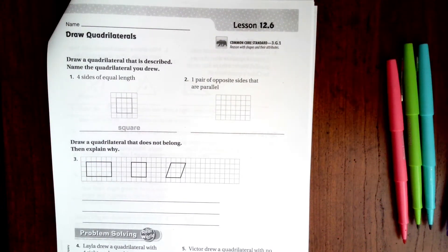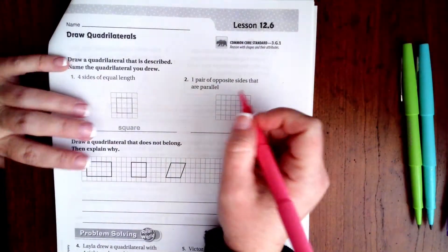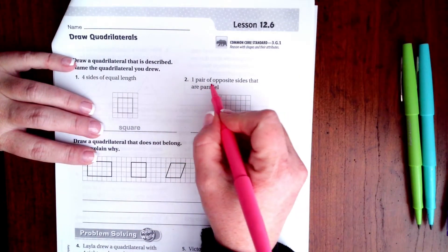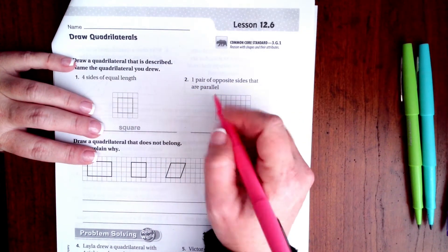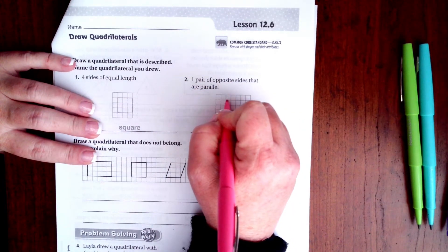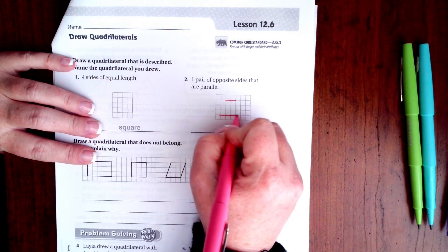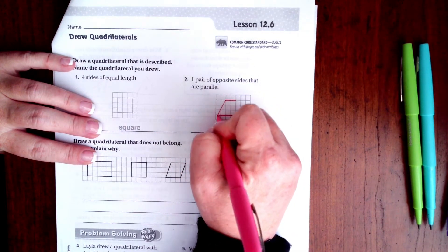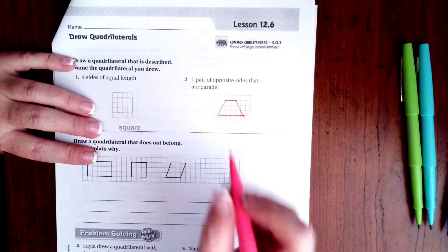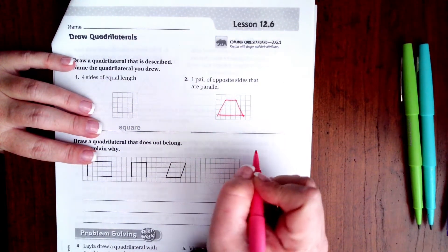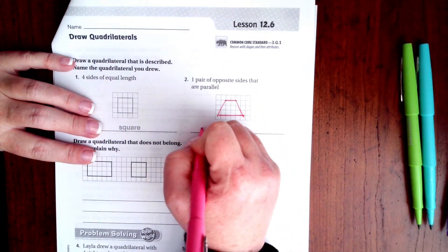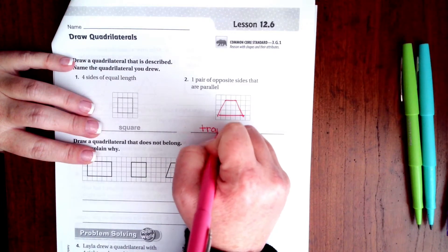Hi guys, welcome to third grade chapter 12 lesson 6. We're going to go ahead and get started with number 2. It wants us to draw a pair, one pair of opposite sides that are parallel. So I'm going to do one that's 2, one that's longer than 2, there we go. So now this side and this side are parallel. That is called a trapezoid.